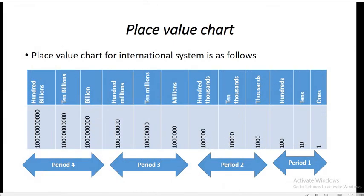This is the place value chart for the international system. We have ones, tens, hundreds — they are considered as one period. Then we have thousands, ten thousands, and hundred thousands, considered as the second period. Then millions, ten millions, hundred millions, considered as the third period. Billions, ten billions, and hundred billions are considered as the fourth period.